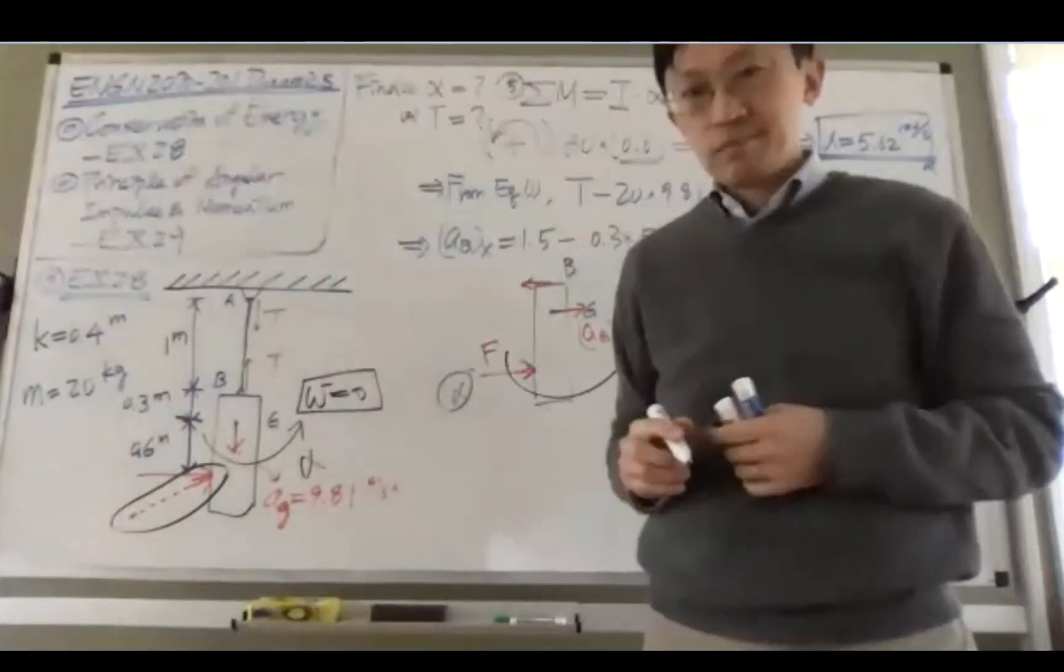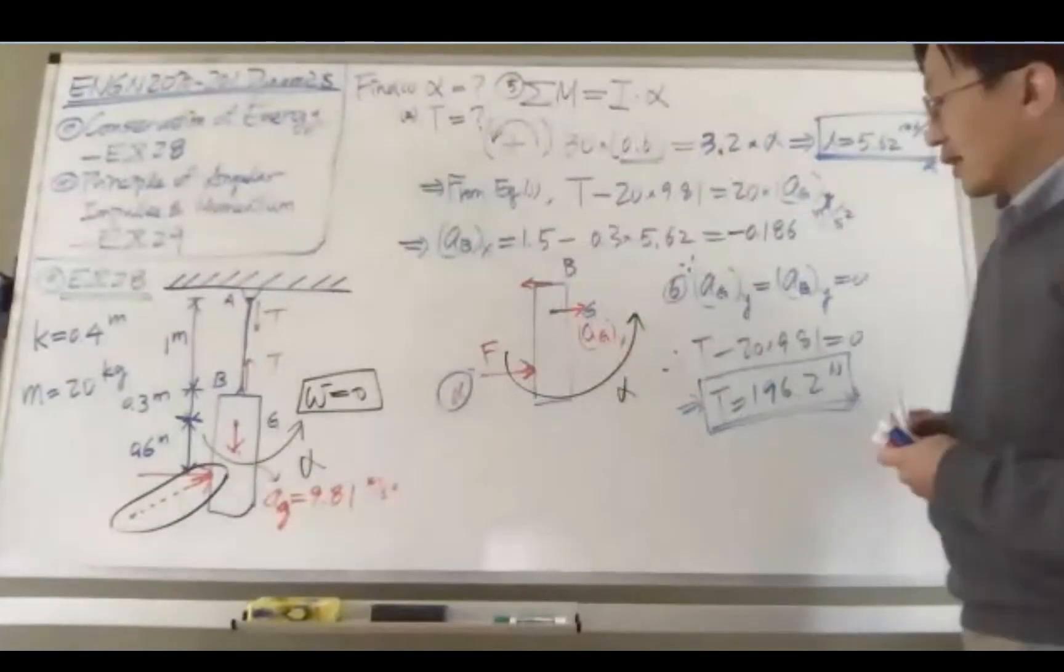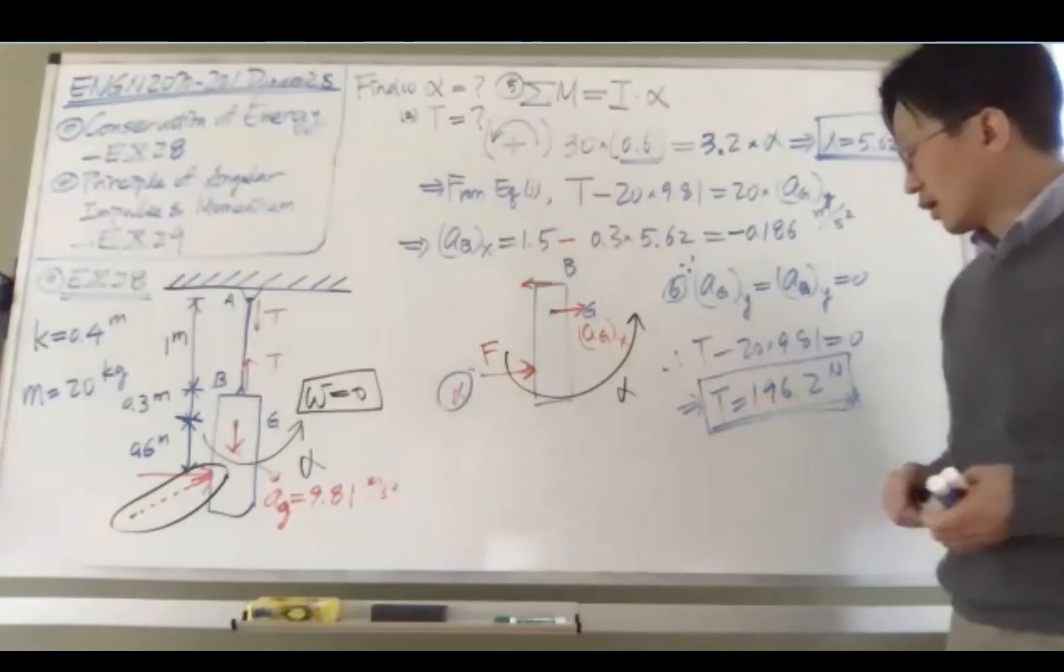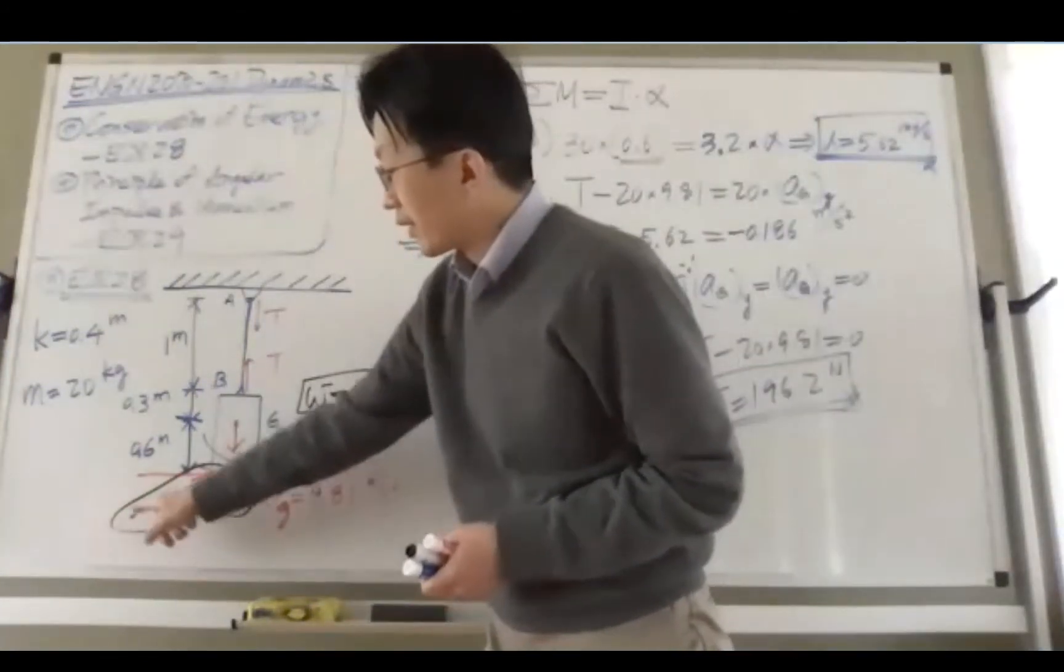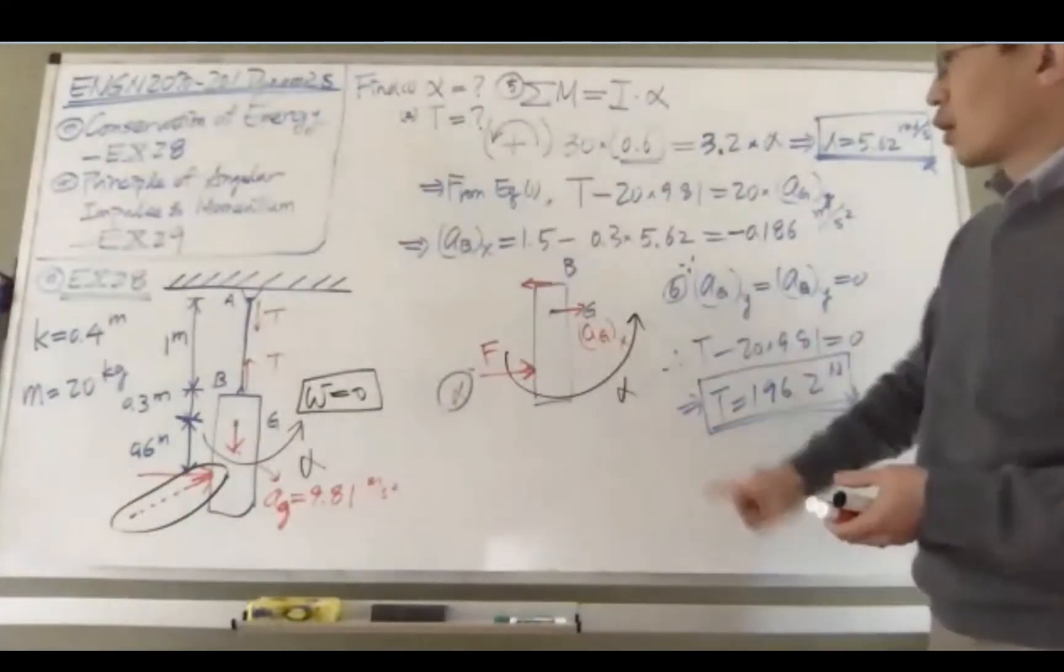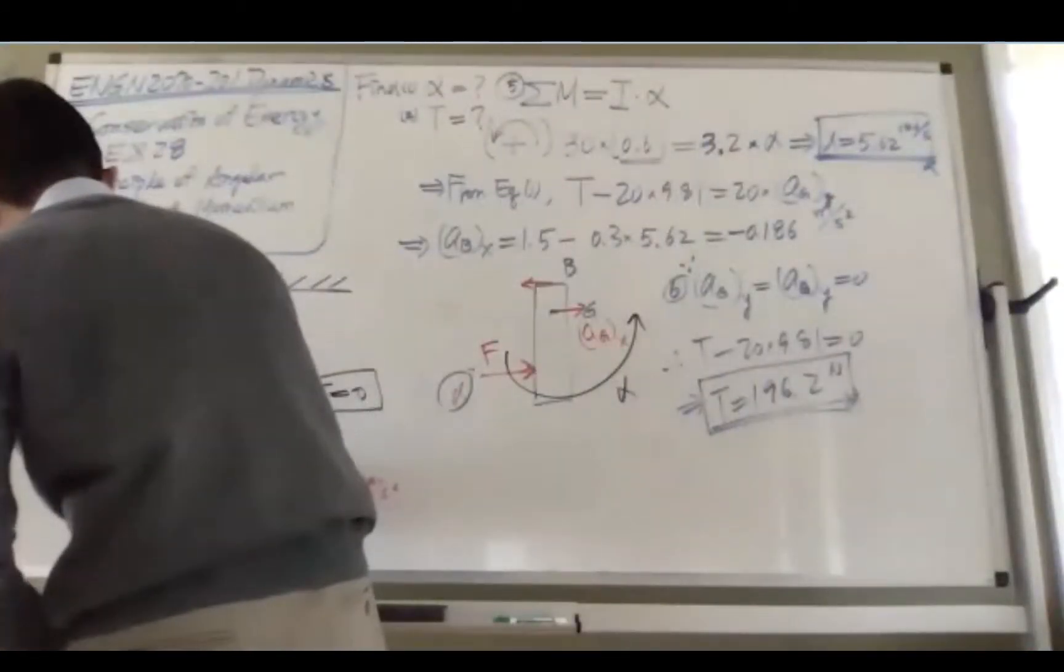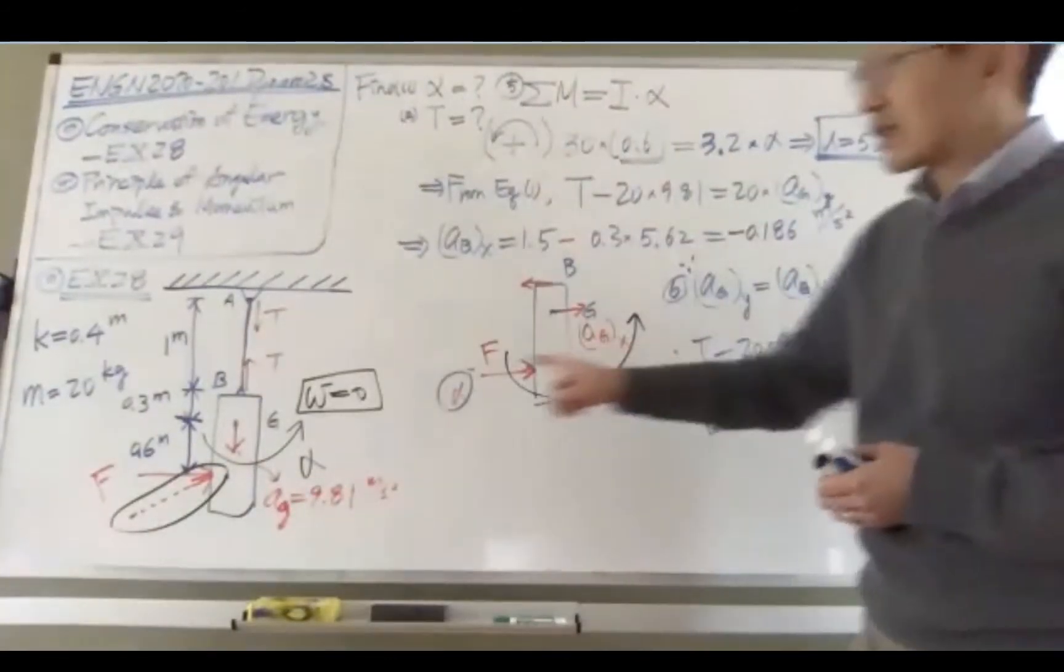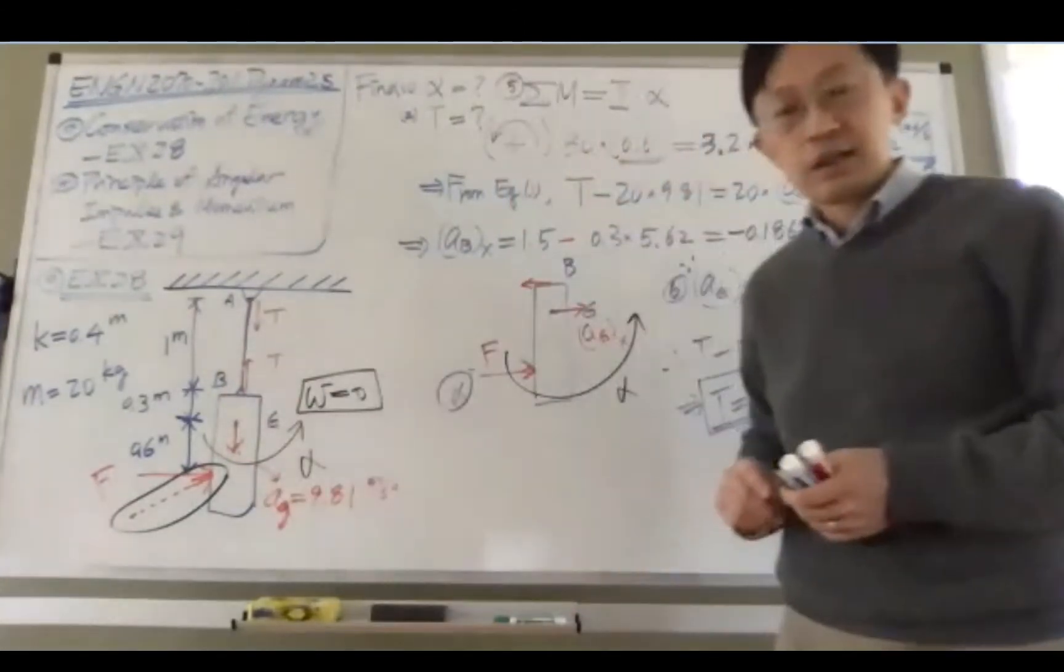If the force is actually applied like this, then this T will no longer be just the weight of the punch bag. There's going to be a vertical component contributed by this external force. The reason we have these values and this answer is because the force F is applied perfectly horizontal. That's why Agy is zero, but if that's not the case, this point B will move upward as well as the center of gravity.